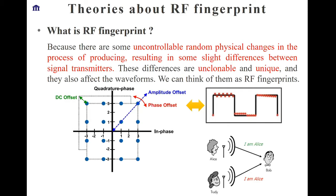Next, I briefly introduce RF fingerprinting. It is impossible for different devices to be exactly identical because there are some uncontrollable random physical changes in the manufacturing process. Regarding minor size differences between transmitters, these differences are unclonable and unique, so we can use these features as the fingerprints of the transmitters — called RF fingerprints. RF fingerprinting is analogous to identifying a speaker by the inherent variations of their voice. RF fingerprints can identify different wireless devices by extracting the time-domain and frequency-domain properties of the signal during device operation.